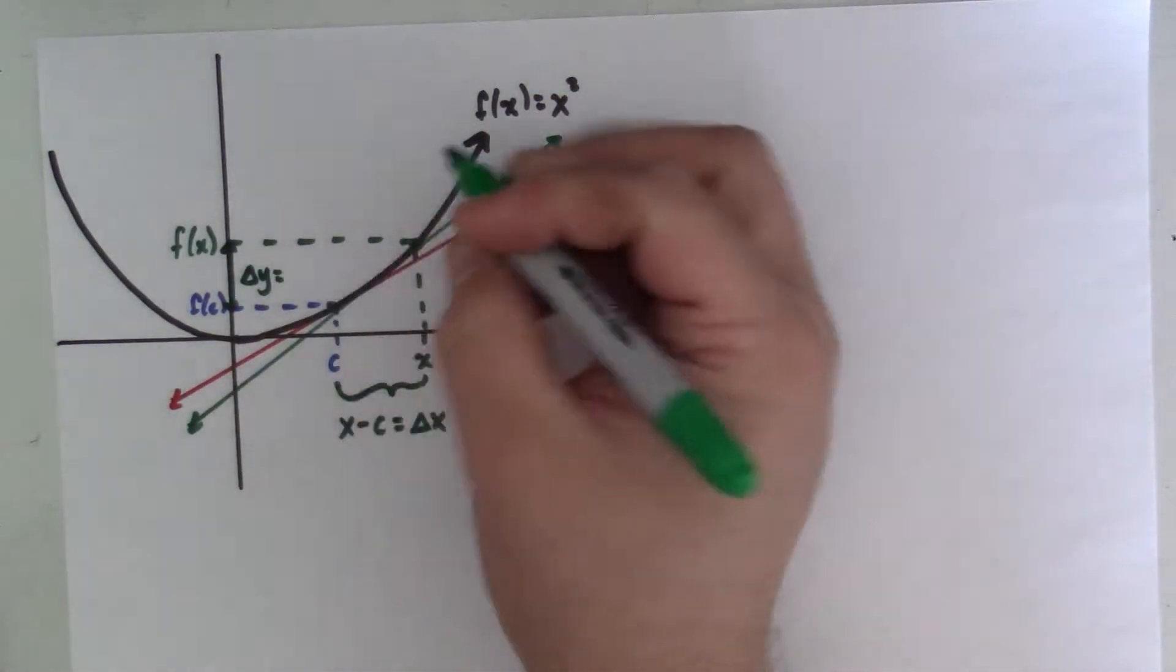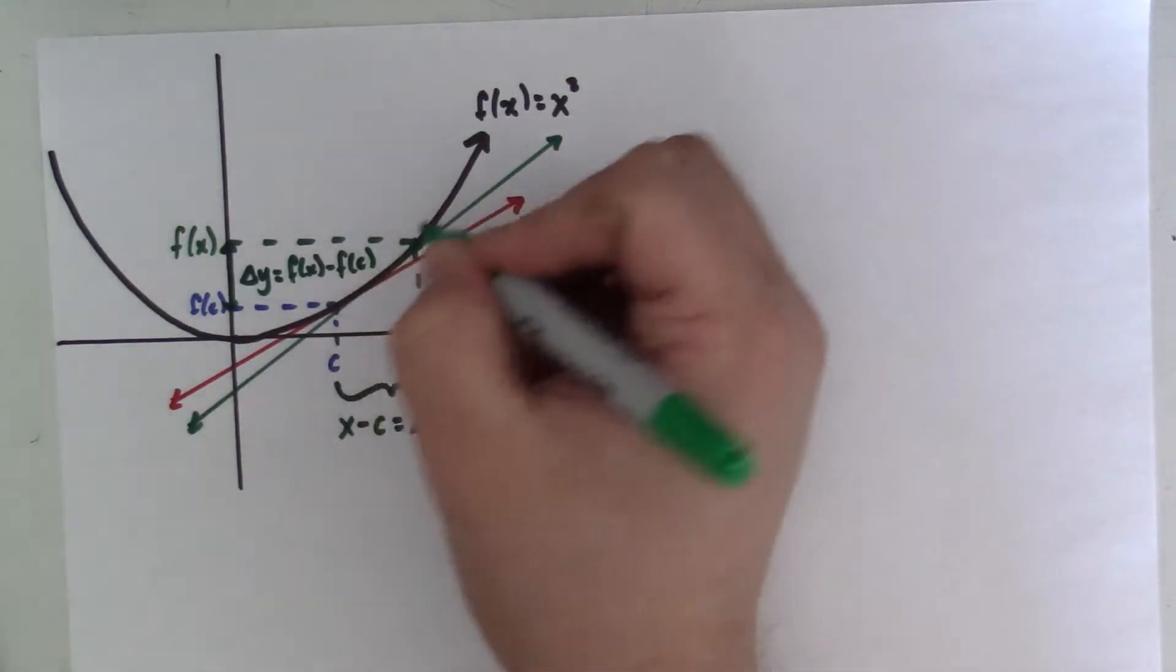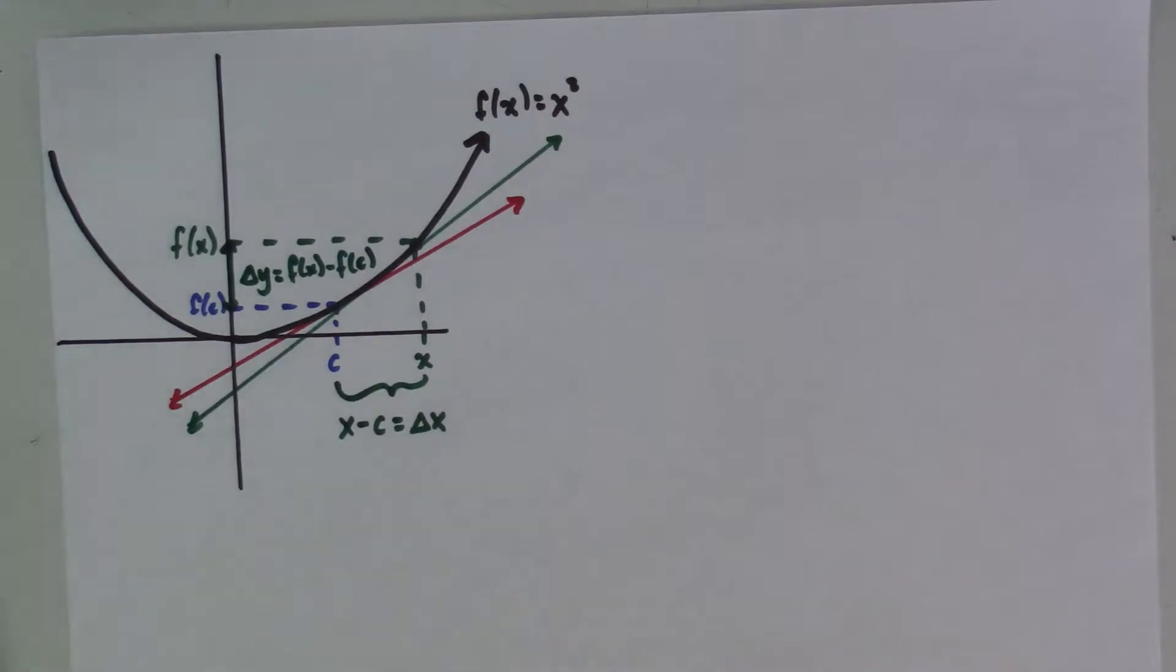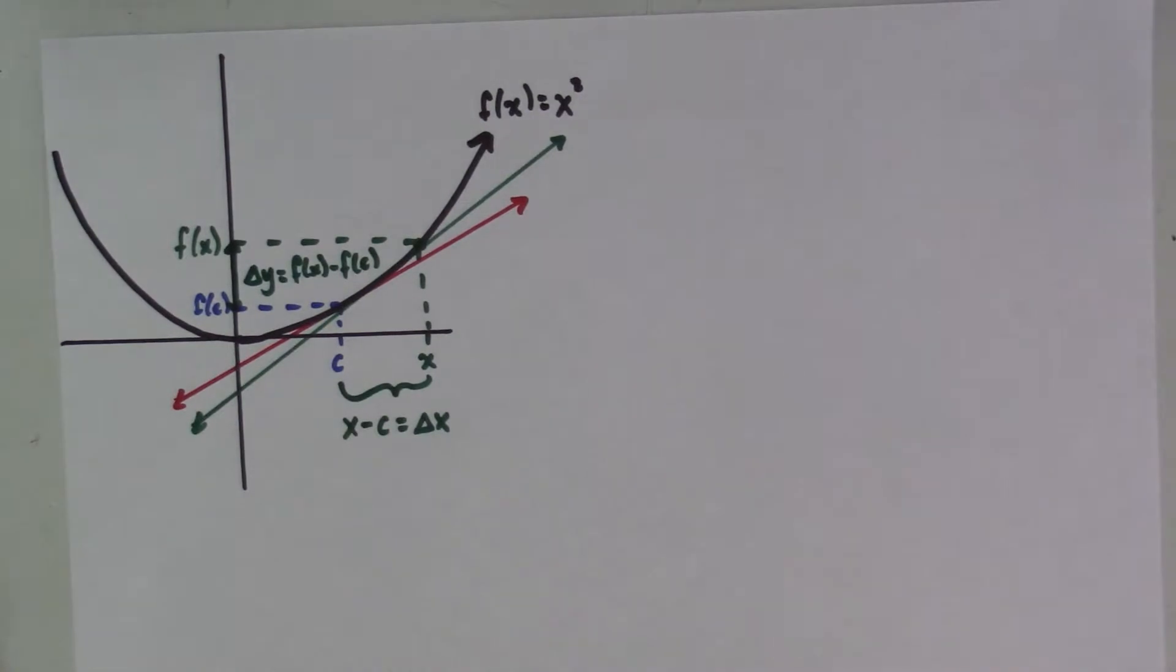And that's where we find the slope of this green line, this secant line between two points to start with.